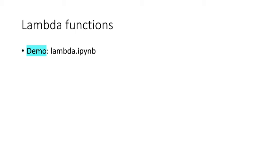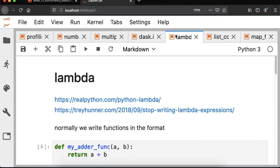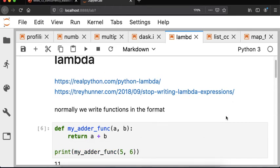Before we get started on the primary content for the lecture, I'm going to give you two little notebooks that have some ideas you may have seen before. We'll play around with lambda functions and list comprehensions, because those are going to show up later in the lecture. I just wanted to make sure you had a reminder of what those are. Lambda functions can be a little confusing, so hopefully this helps show you what their structure is.